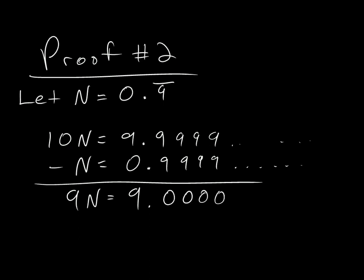And do I need to put the dot, dot, dot? No. I mean, technically, 0.0 would be a repeating decimal, but we don't call it that because it has no value. So, really, I just have 9n equal to plain old 9.